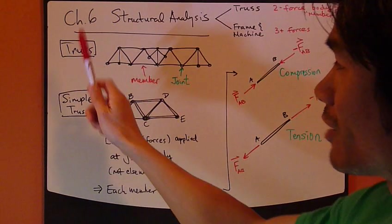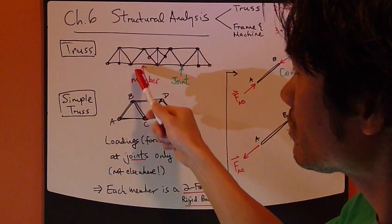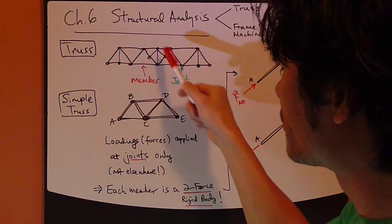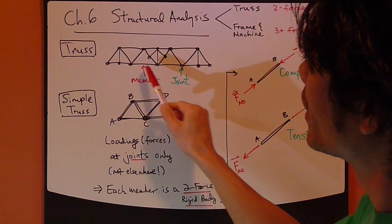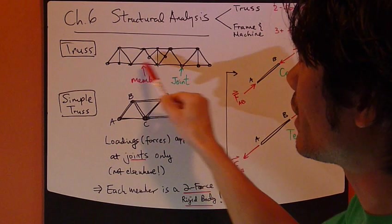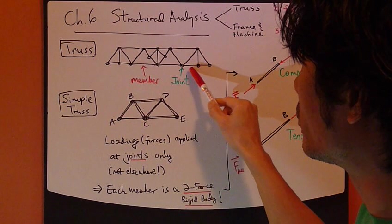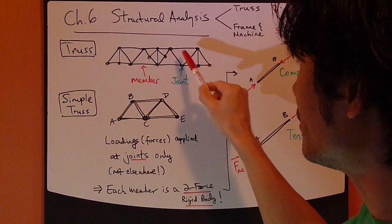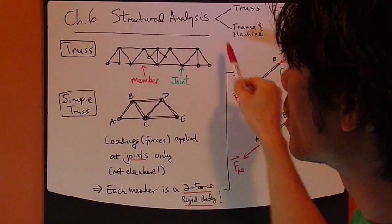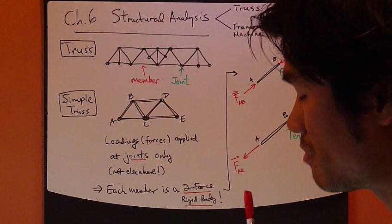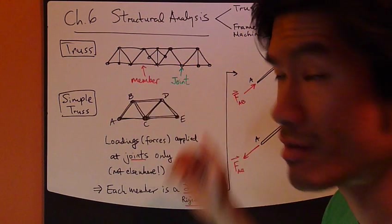First, a truss. A truss could look something like this - it's just a bunch of rigid bodies connected together. For each piece of rigid body, it's called a member. The point where two or more members are joined together is called a joint. So a truss simply is made out of a bunch of members and a bunch of joints, that's all.